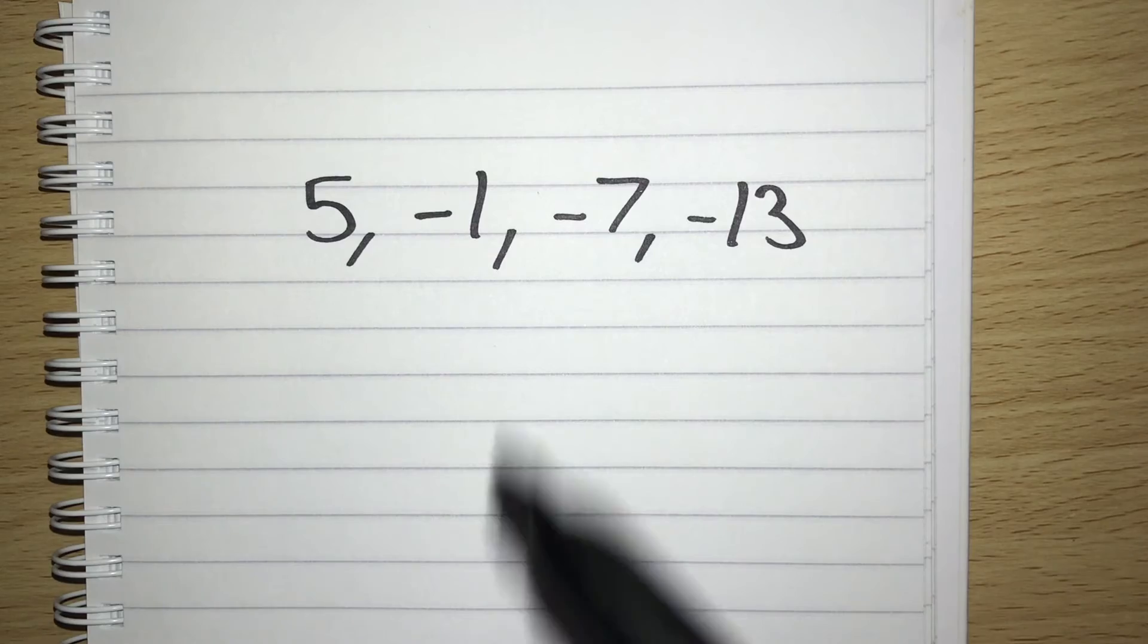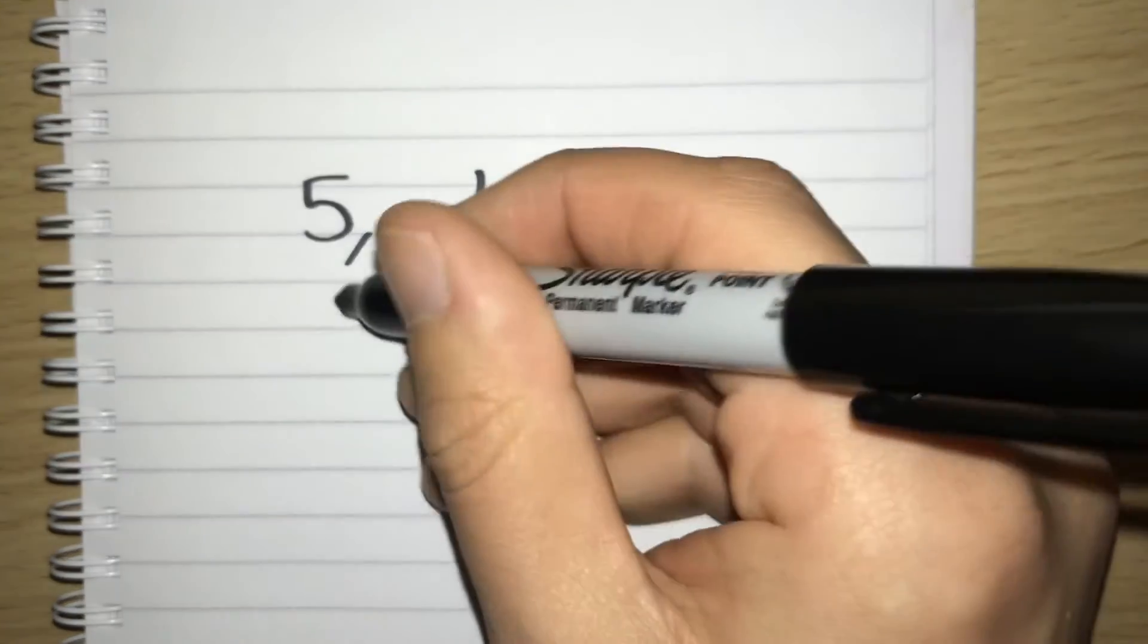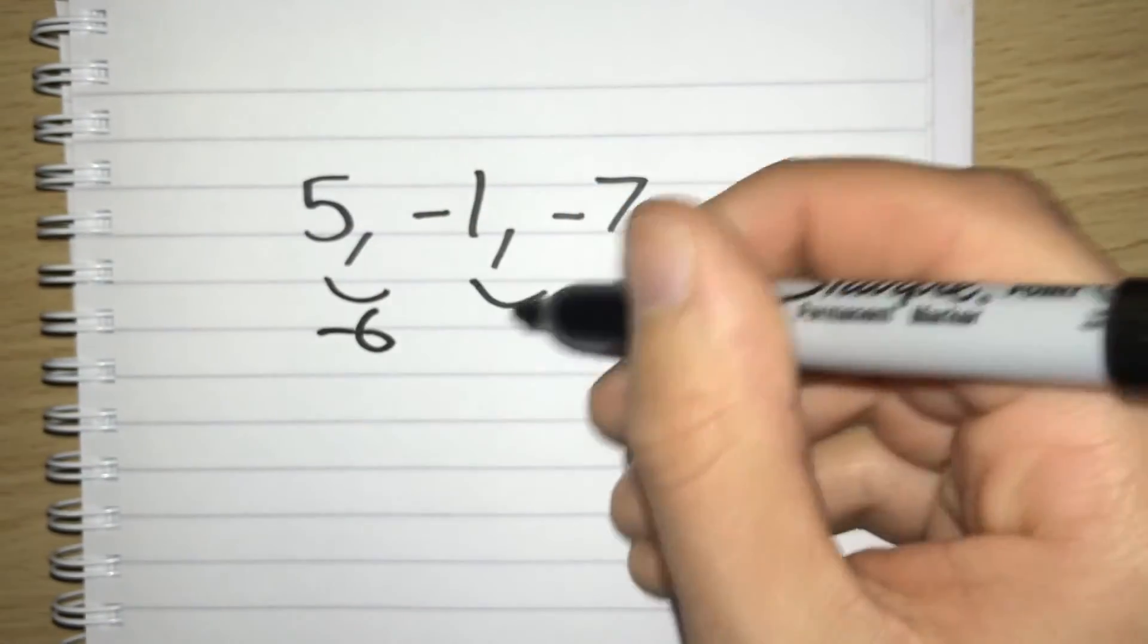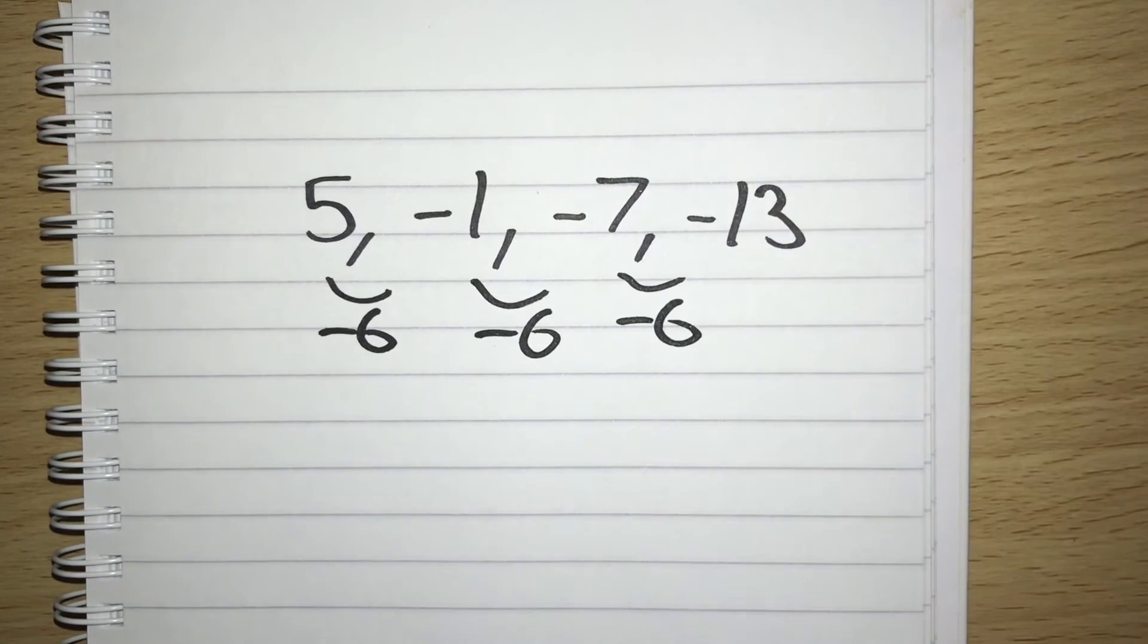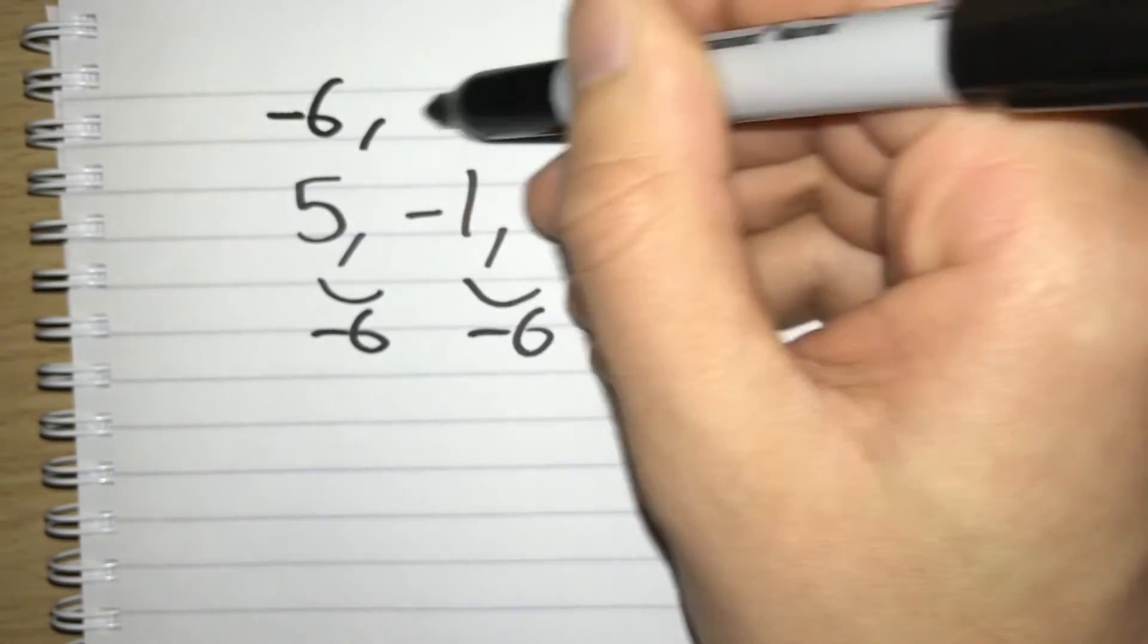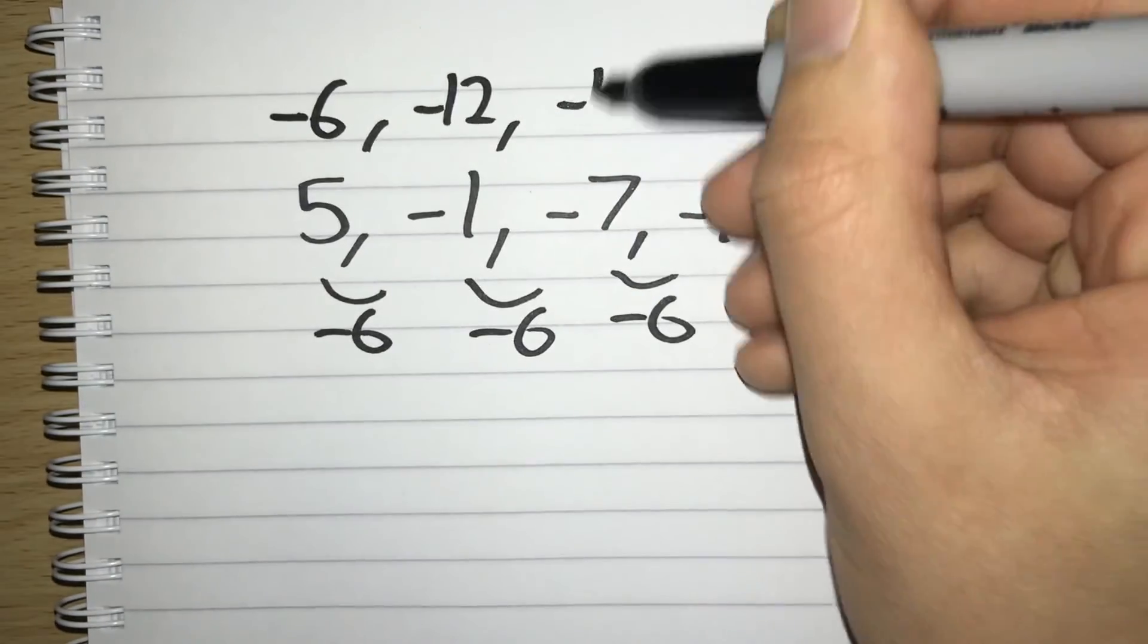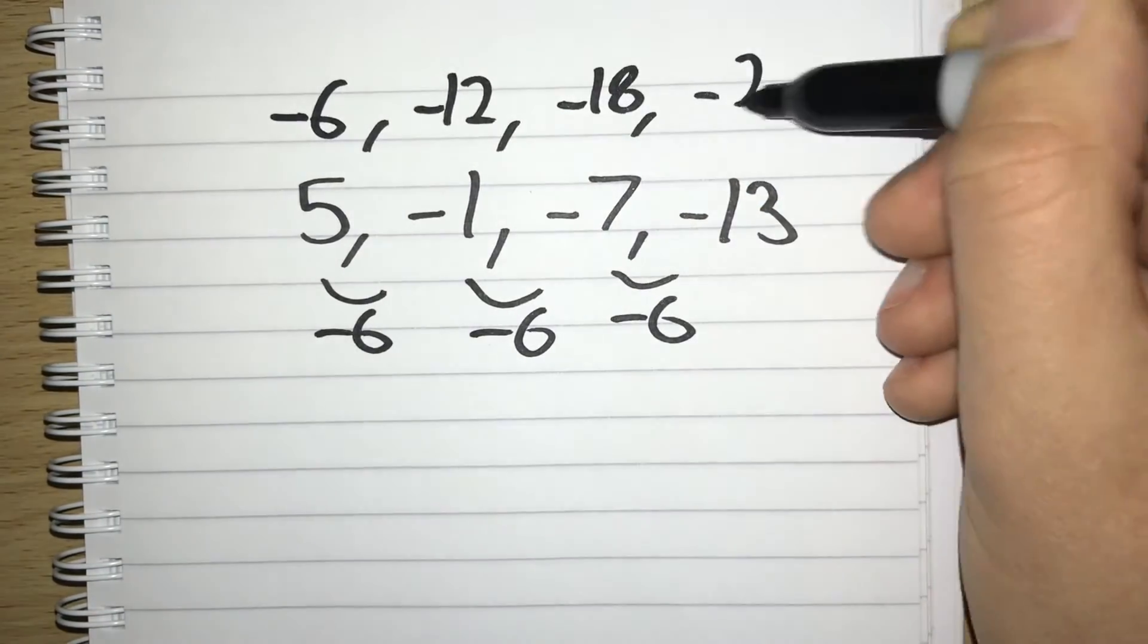Let's go through this one then. What are we doing each time? To go from 5 to minus 1, we're taking away 6. From minus 1 to minus 7, we're taking away 6. And from minus 7 to minus 13, we're taking away 6. We're always taking away 6. So let's do our negative 6 times table. We start off with negative 6, then negative 12, negative 18, and negative 24.